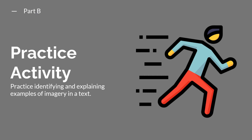Let's go ahead and pause the video again, this time to complete Part B of the practice activity, where you'll practice identifying and explaining examples of imagery in the text. When you're done, don't forget to unpause the video to continue the lesson.